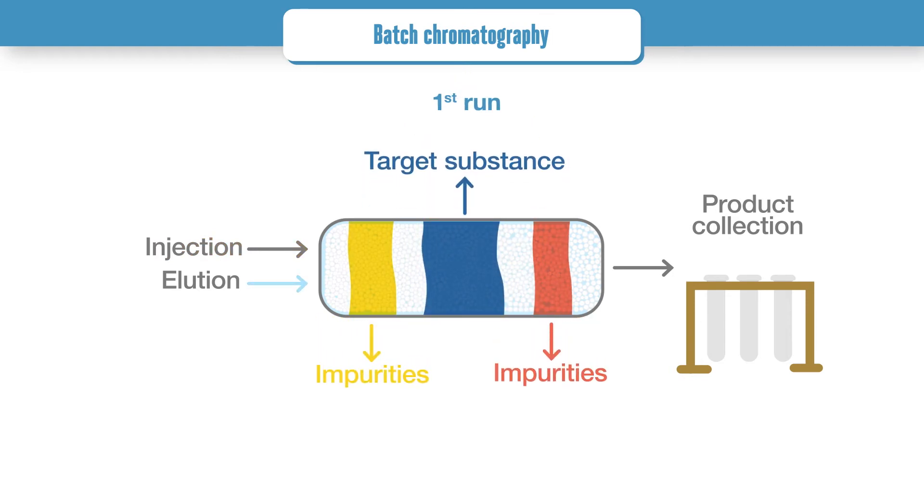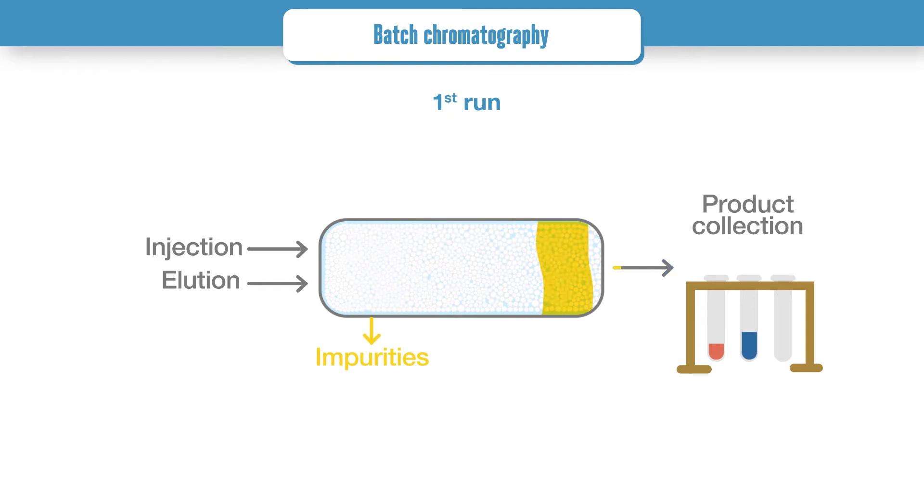In a batch process, all products must be eluted at the outlet of the column before injecting for a second run. It is a time-sequenced collection of products.